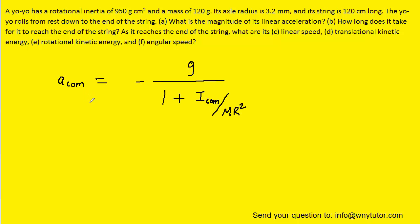Here is the equation that gives the linear acceleration of a yoyo, which was derived in the body of the text of this chapter. Since we're trying to find the magnitude of a linear acceleration, we can actually take the absolute value of both sides of this equation. When we take the absolute value of the right-hand side, the negative sign will be dropped.